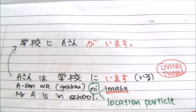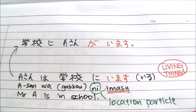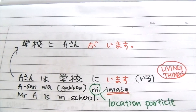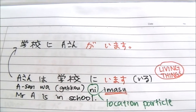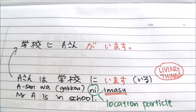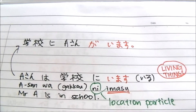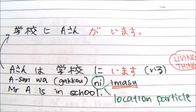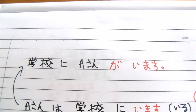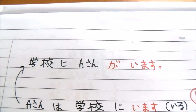For the first sentence 'Gako ni A-san ga imasu', probably someone is asking 'Who is there in the school?' So 'gako' is the focus here, whereas in the second sentence, 'A-san' is the focus. By the way, if there is no 'ni' in front of 'imasu' and you are stating the person who is there, for example 'A-san ga imasu', you must use 'ga' — never use 'wa'.